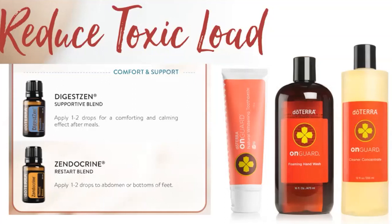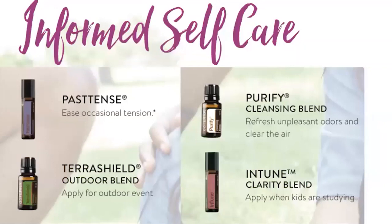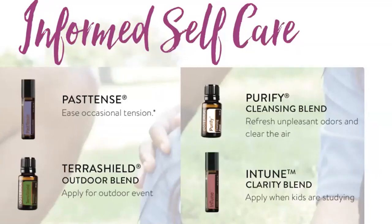Finally, informed self-care. Past Tense has been a lifesaver for bad migraines — it comes as a roll-on so I can take it anywhere. Whenever I have a migraine I apply it along my temples and the base of my skull with massage. When addressing pain with essential oils, always apply with massage because it improves blood circulation and helps your body absorb the oil better for the best results.